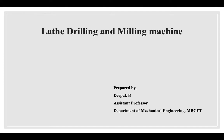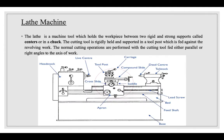Today's topic of discussion is about lathe machine, drilling machine, and milling machine. A lathe is a machine tool which holds the workpiece between two rigid and strong supports called centers, or they can be held in between chucks. Chuck and center are basically work holding devices. The cutting tool is rigidly held and supported in a tool post which is fed against the revolving work. The normal cutting operations are performed with the cutting tool fed either parallel or at right angles to the axis of the work.